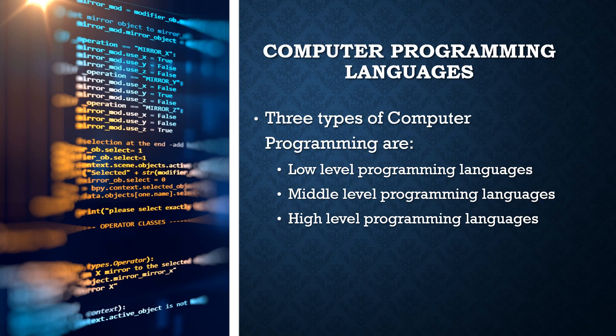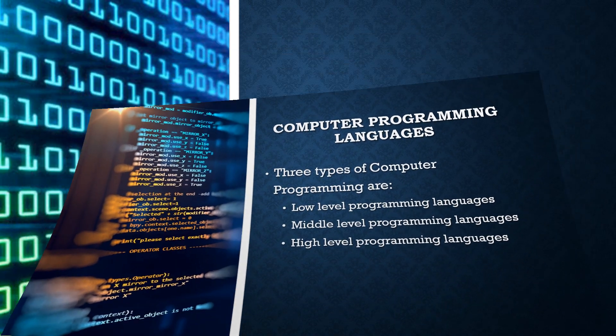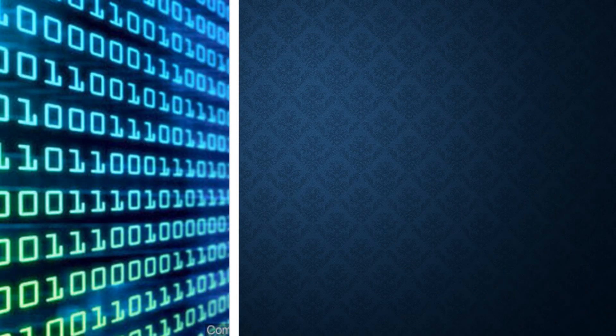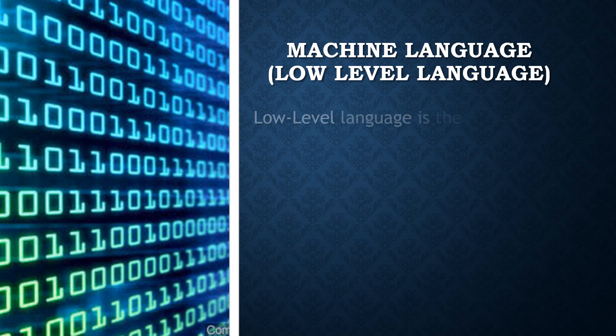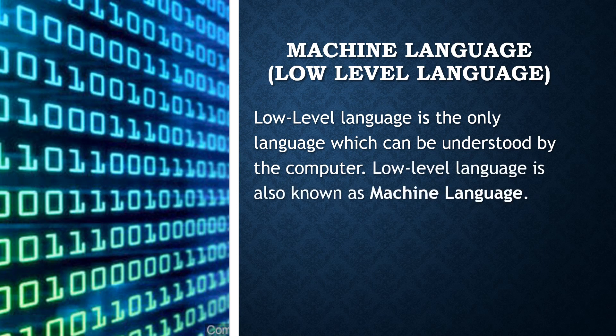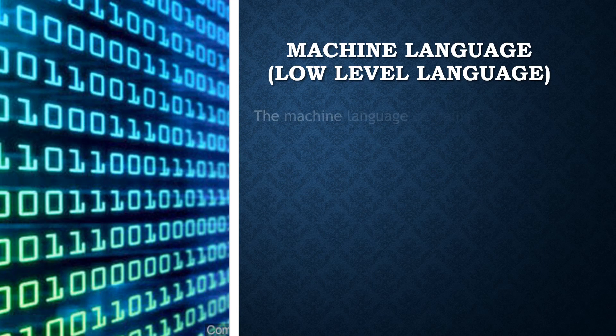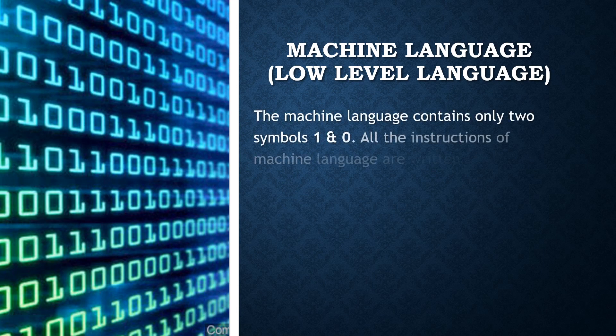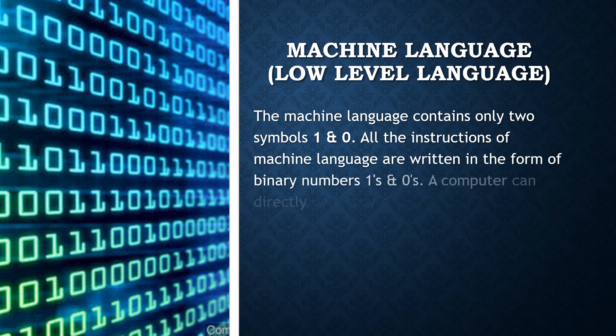Let's begin with low-level language. The low-level language is the only language which can be understood by the computer. Low-level language is also known as machine language. The machine level language contains only two symbols: 1 and 0. All the instructions of machine language are written in the form of binary numbers, and the computer can directly understand the machine language.